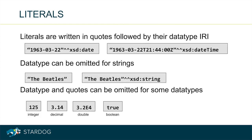In RDF and SPARQL, literals are written in quotes followed by the datatype IRI. Just like other IRIs, datatype IRIs can be written as prefix names too. The XSD prefix denotes the namespace for the XML schema datatypes, where many commonly used datatypes are defined. The datatype IRI can be omitted for strings, so the two string literals shown are equivalent. For some datatypes like integers, you can omit the quotes too and just write the number as-is.